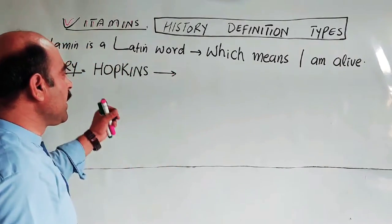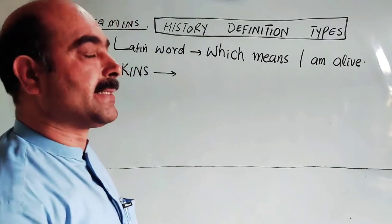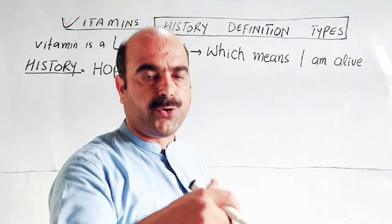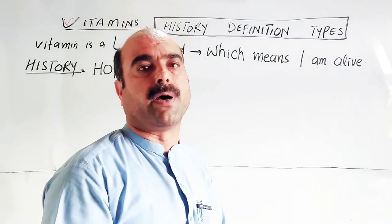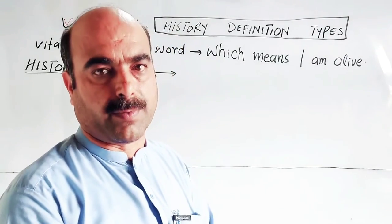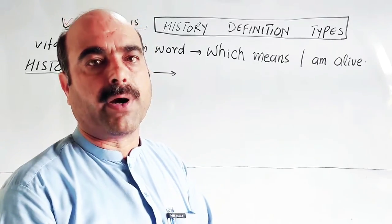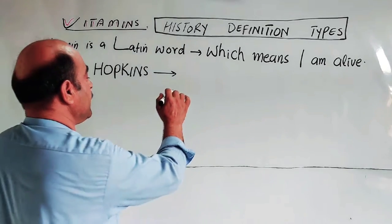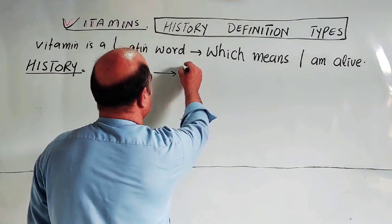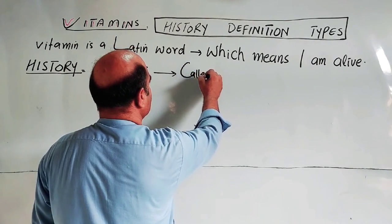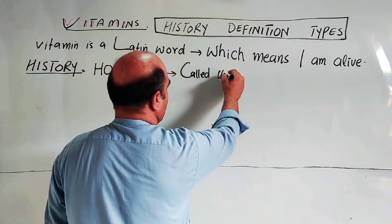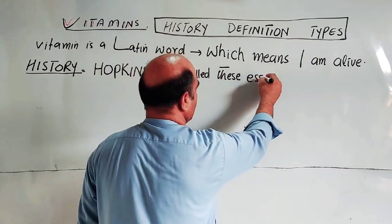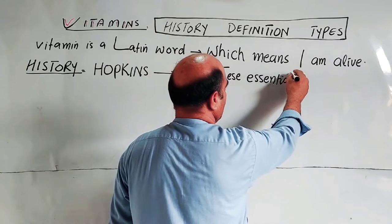These are very essential nutrients — very essential nutrients which are necessary for general growth of the body and for maintaining the body functions. Hopkins called these chemical substances essential nutrients.